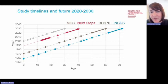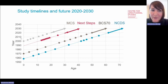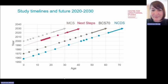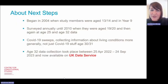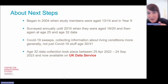What makes Next Steps distinct from the other three cohorts at CLS is that the others follow cohort members from birth, covering the whole life course. Next Steps has some challenges filling in that gap from birth to adolescence, but we have tried to address that in this most recent sweep by including some retrospective measures of childhood experiences. Next Steps has an unusual heritage — it was initially run by the Department for Education with a strong focus on educational transitions and transitions into the labour market. It began in 2004 when participants were age 13 or 14, and they were surveyed annually from age 13 or 14 up until age 20, before we returned to them at age 25 and again at age 32.